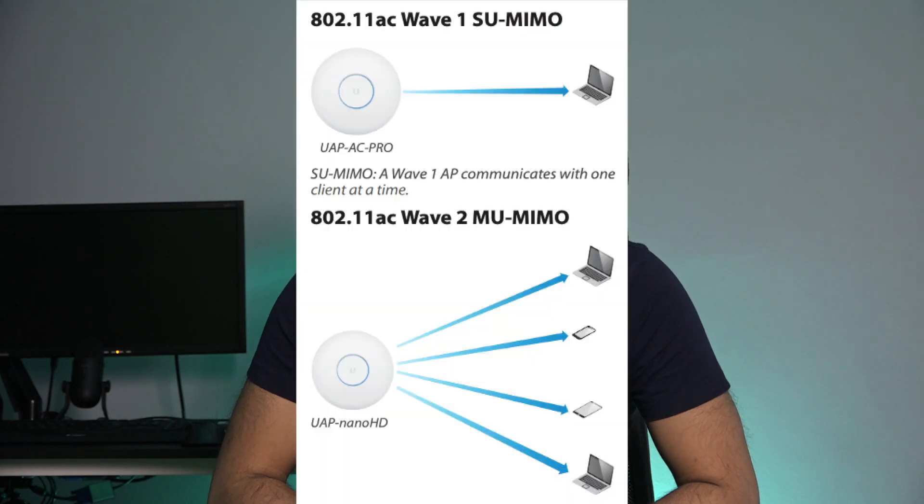After Wave 1 came Wave 2, where they added a wider range of channels, up to four spatial streams, and then multi-user MIMO — MU-MIMO. You can see the difference between single-user and multi-user MIMO on screen.